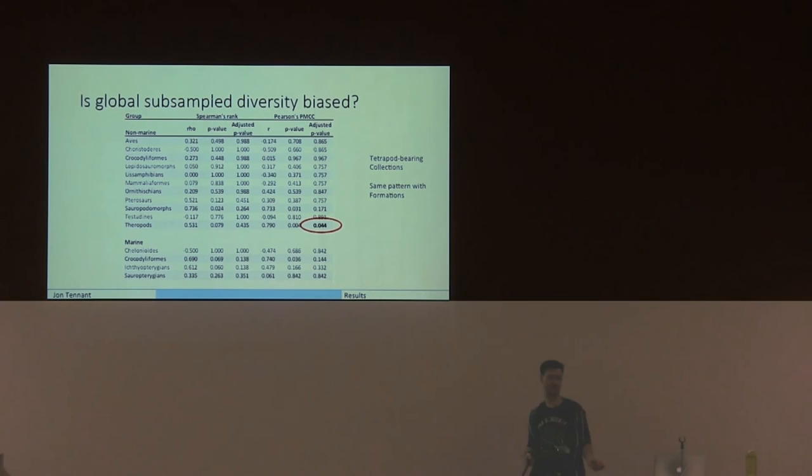Importantly, when you start looking at these sampling proxies, in every single case for every tetrapod group, raw diversity, raw empirical diversity, is strongly correlated with almost every single sampling proxy you throw at it. So there's very strong support for this redundancy hypothesis where you have non-independence between your sampling metric and your diversity count. So raw diversity, very, very bad. But weirdly, when you apply subsampling on the global level and then re-perform these calculations, those relationships break down in every single instance. If you throw formations at it, collections at it, outcrop area at different taxonomic levels to account for potential redundancy, the relationships break down entirely. Apart from theropods, in which case the adjusted p-value remains significant. We think this is because theropods are essentially so ubiquitous in the fossil record that they're just everywhere.